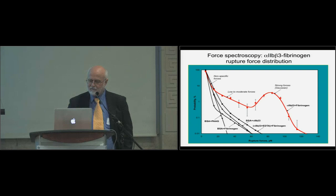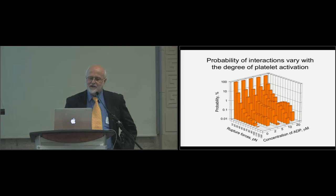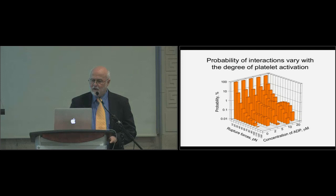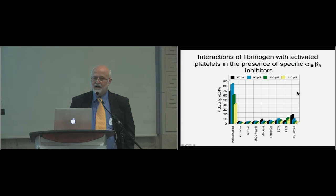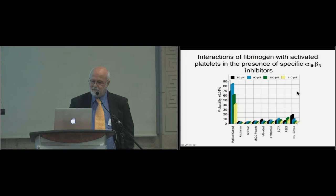By varying ADP concentration to achieve different levels of platelet activation, we can see the effect of activation level on these histograms. We can also look at the effect of inhibitors — some used clinically for controlling thrombosis, such as PGE1, which inhibits the same pathway as aspirin — and observe the inhibition of these interactions at the single-molecule level.